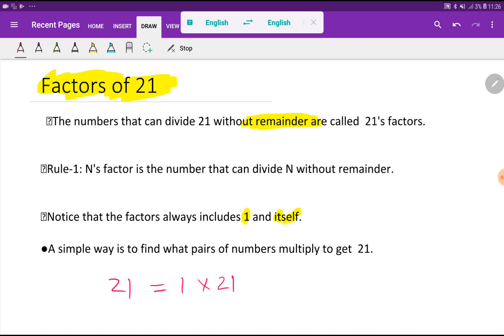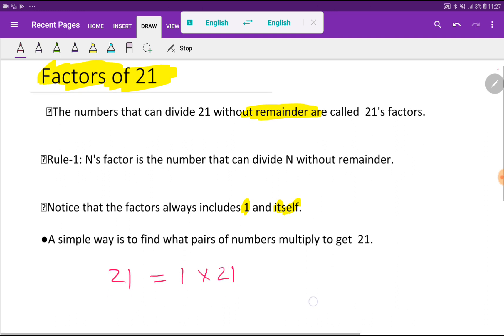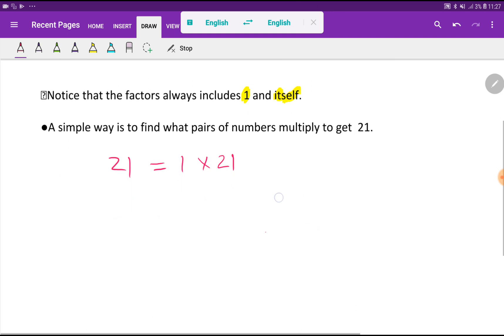A simple way is to find what pairs of numbers multiply to get 21. That is, we can multiply 1 times 21 that gives us 21. This means that 1 and 21 are factors of 21. If you divide 21 by 1, then the result will be 21. If you divide 21 by 21, you will get the result 1.